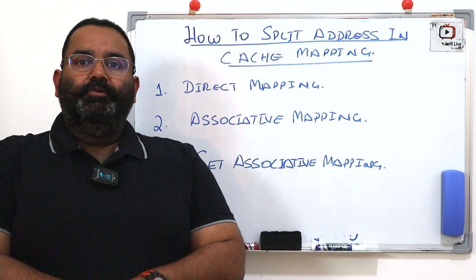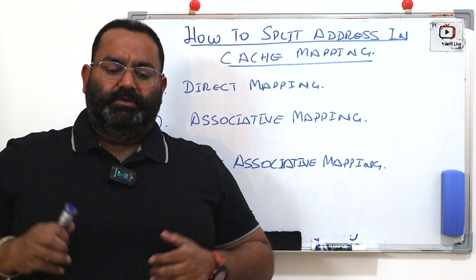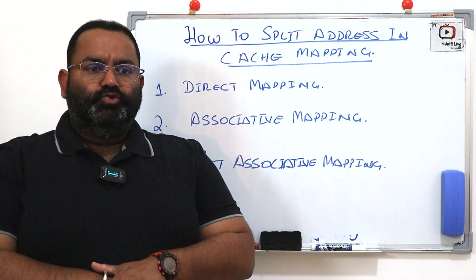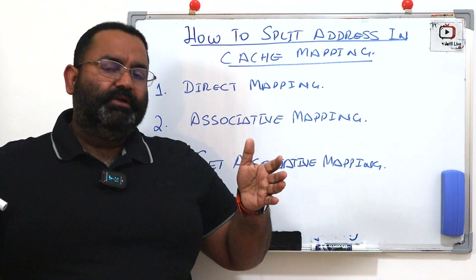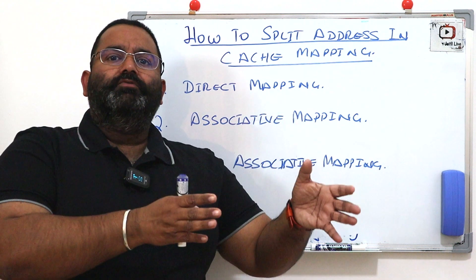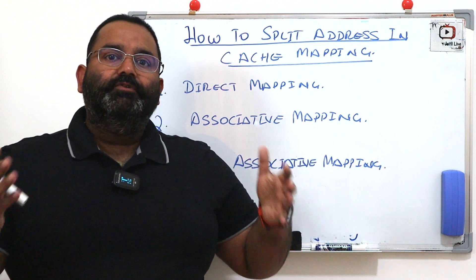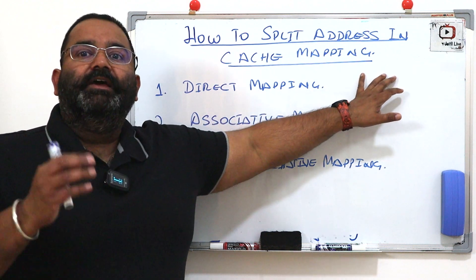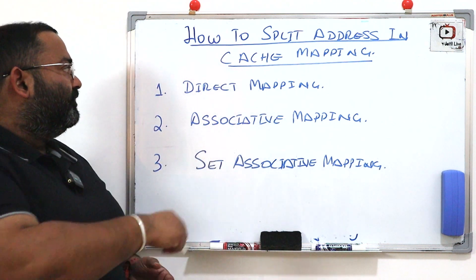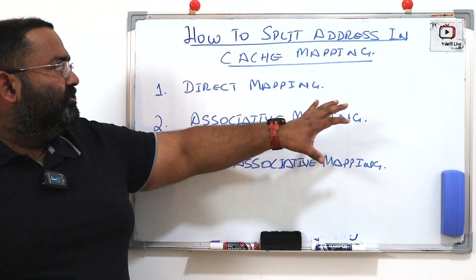Welcome to my channel. Today we are going to discuss how we can split the addresses in cache mapping. If you are watching this video, you are already a computer organization and architecture student and you already have an idea what cache mapping or memory mapping is. Memory mapping is when we bring a word from main memory to cache memory. In cache mapping there are three techniques: direct mapping, associative mapping, and set associative mapping.